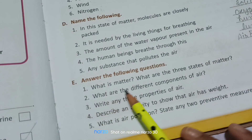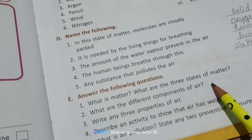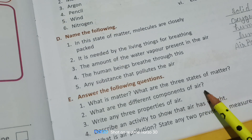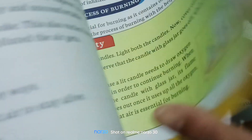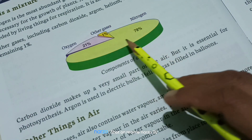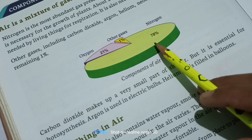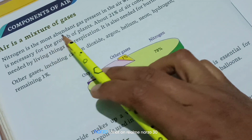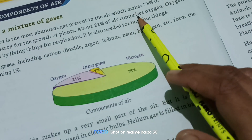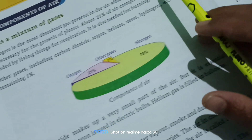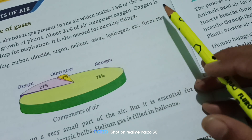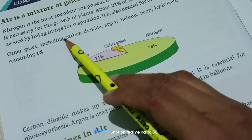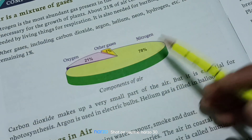Question two: What are the different components of air? The components of air are nitrogen (78%), oxygen (21%), carbon dioxide (0.03%) and other gases including argon. Nitrogen is the most abundant gas in air and is necessary for plant growth. Oxygen is needed by living things for respiration.